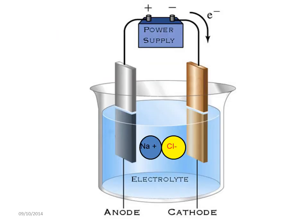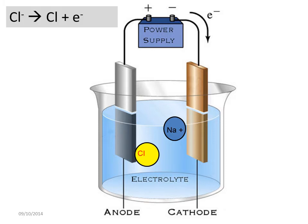In electrolysis, the negative ion moves towards the positive electrode. The negative ion donates an electron to become an atom. In the case of chlorine, a chlorine ion would donate one electron to become a chlorine atom. This is called oxidation.